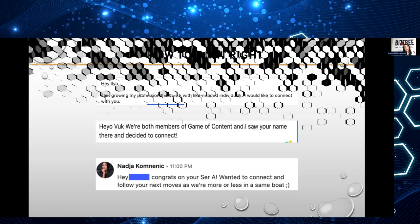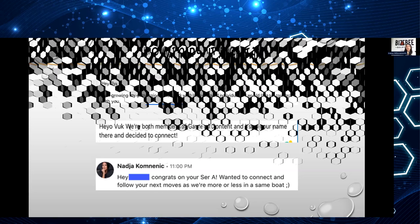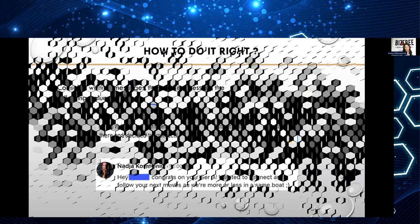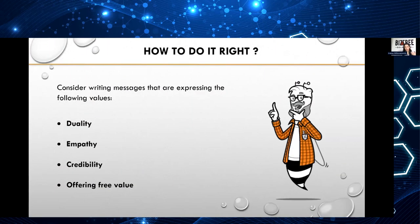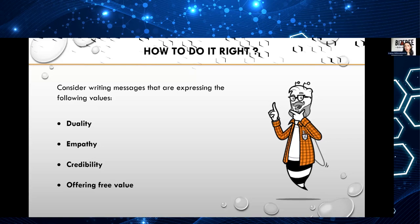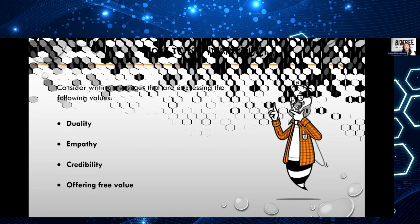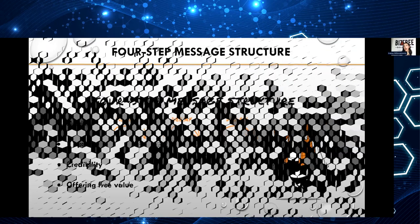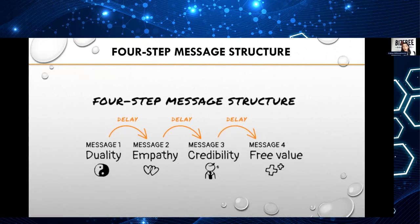When crafting messages after the conversation starters, the whole message sequence should follow these values: duality, empathy, credibility, and offering free value. I have a visual representation of how this four-step message structure looks like at Bisbee.